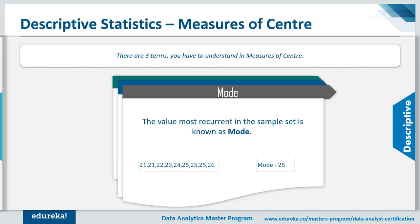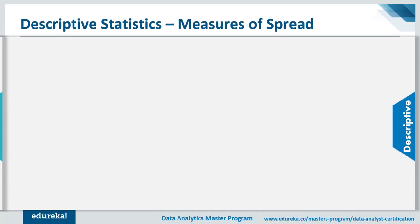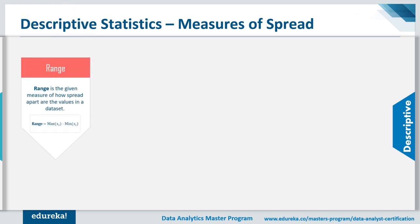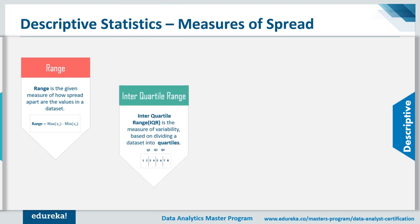As the sample set changes, the mean, median, and mode values also change. Moving on to the measures of spread, there are four terms: range, interquartile range, variance, and standard deviation. Range is the measure of how spread apart the values are in a dataset — calculated as maximum minus minimum.